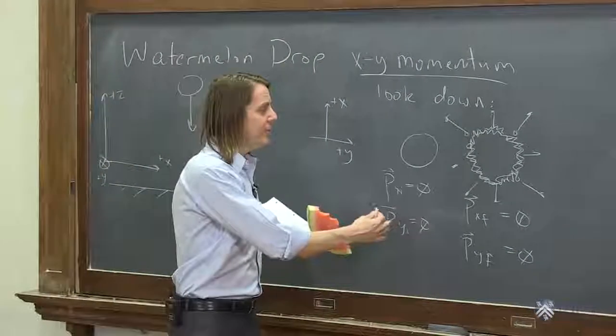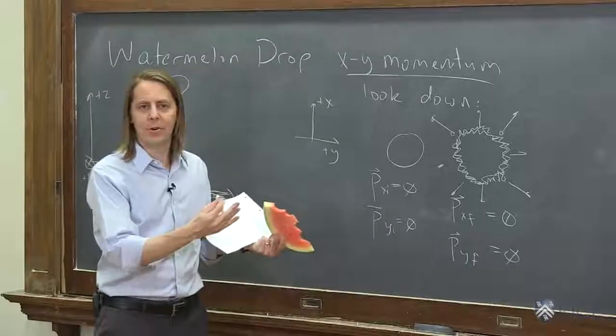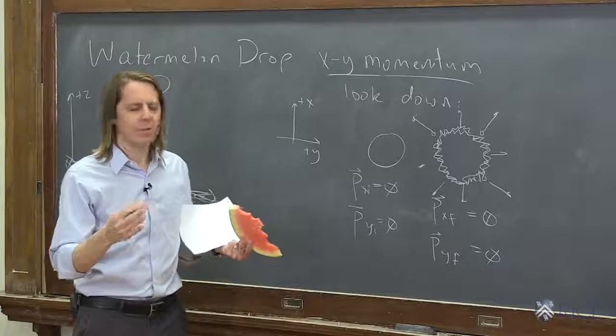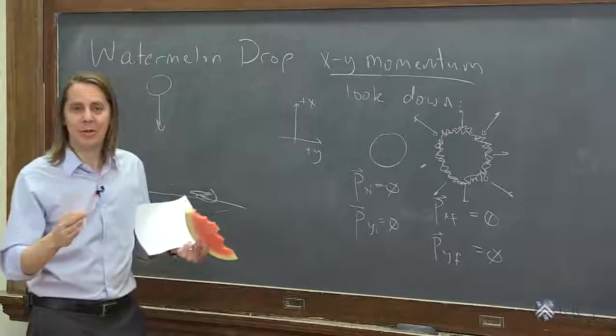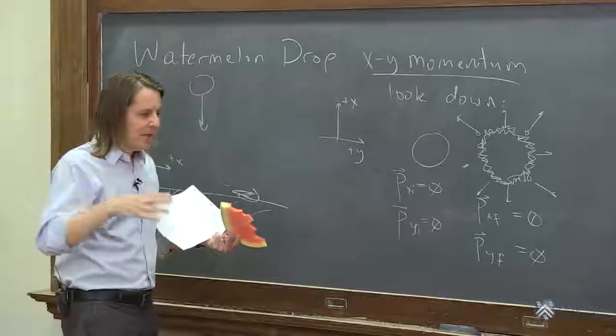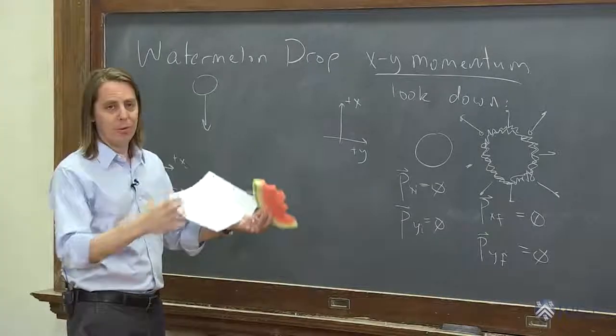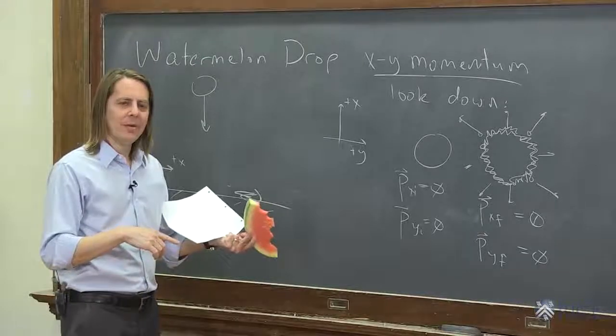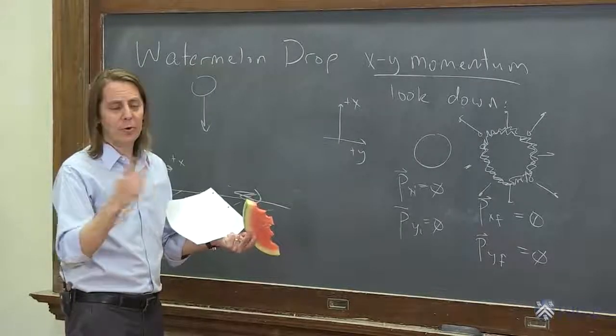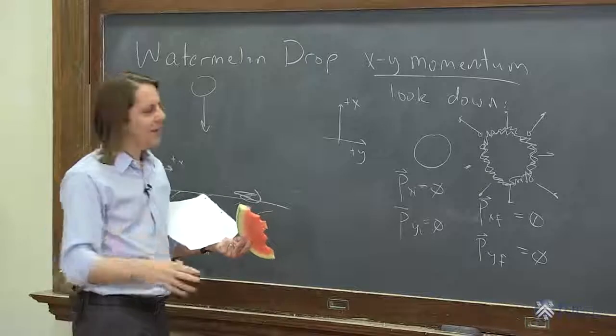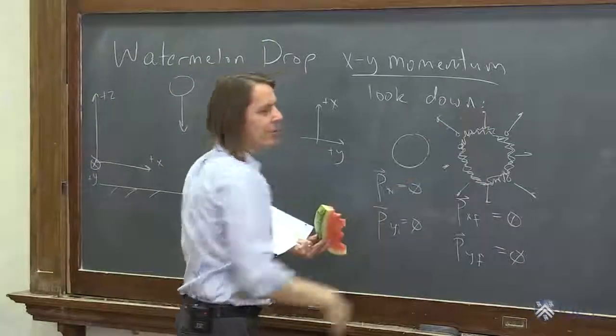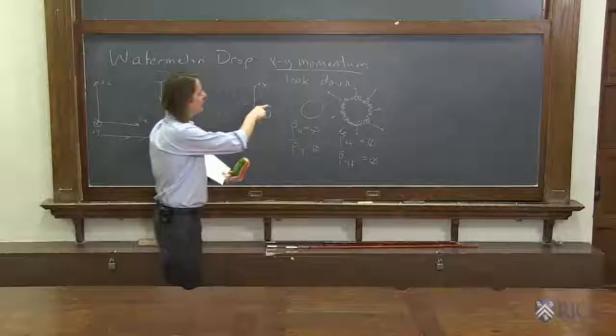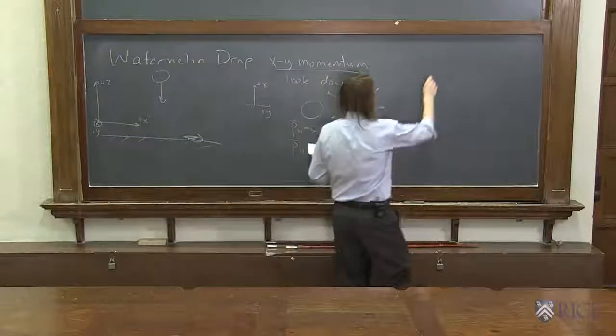This is actually related to how they discover new particles at the Large Hadron Collider and other high energy physics experiments. They look for missing momentum. So they know how much momentum went in, they watch the big explosion, they detect all the particles that they know about, and it should conserve momentum. And if it doesn't, that means there must be particles that either they don't know about or their detector doesn't detect. This idea is very similar to how they discover things like Higgs bosons and top quarks and all that stuff. So that's x, y, some momentum information there. What about z?